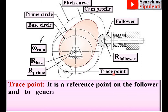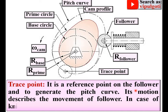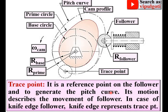Next: trace point. It is a reference point on the follower used to generate the pitch curve. The path generated by the trace point describes the movement of the follower.